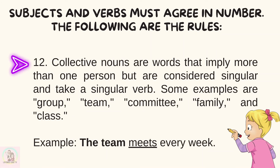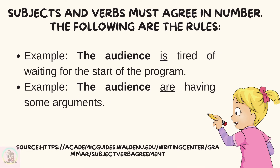Number twelve, collective nouns are words that imply more than one person but are considered singular and take a singular verb. Some examples are group, team, committee, family, and class. Example: the team meets every week. Additional examples: the audience is tired of waiting for the start of the program. The audience are having some arguments.